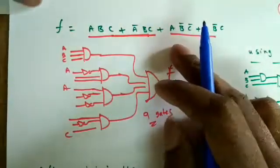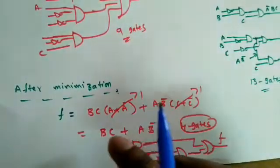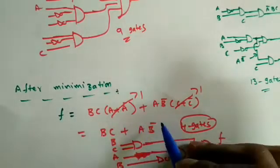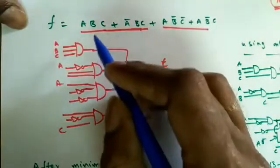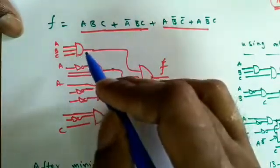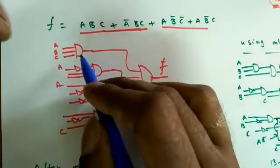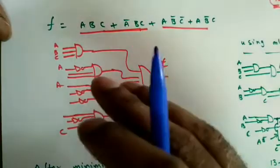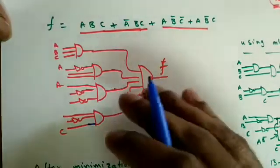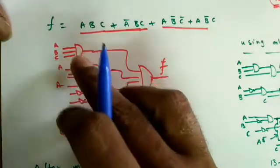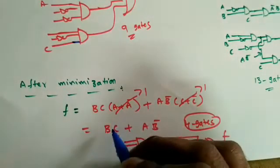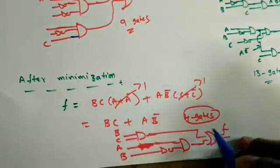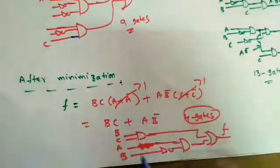The conclusion is: to implement any Boolean or logic function, we need to reduce it to a minimum number of literals and terms. The minimized expression contains only two terms with two literals each, so only two-input gates are needed, compared to three-input and four-input gates in the non-minimized case. The number of gates required is much less with minimization — nine or thirteen versus just four.